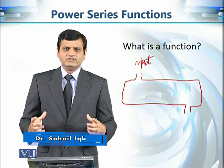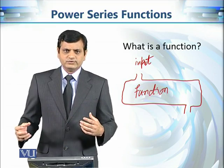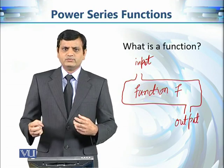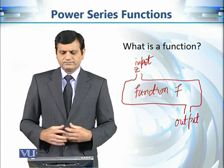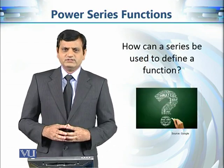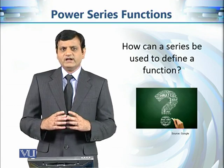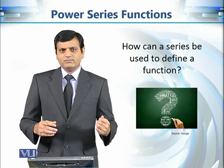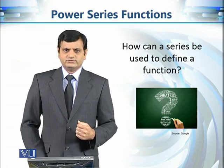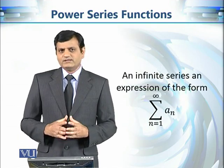A function is like a machine where we give input and we get output. So if we input some complex number z, then the output must be a complex number. Now let's see how we can use infinite series to define a function — that is, how we can define a machine that takes complex numbers as input and gives complex numbers as output.